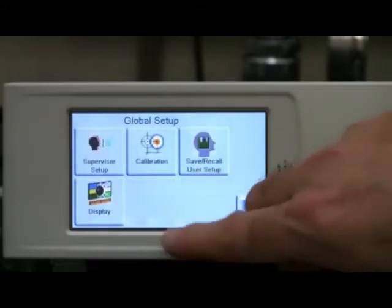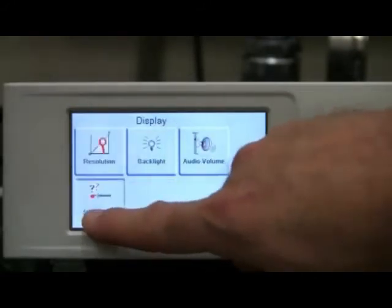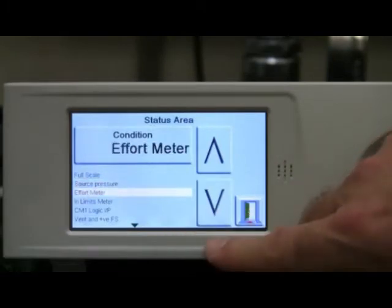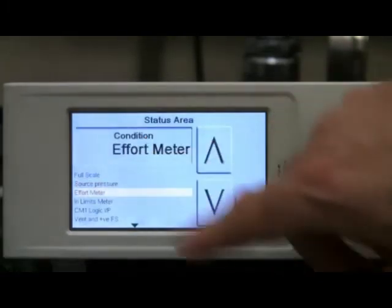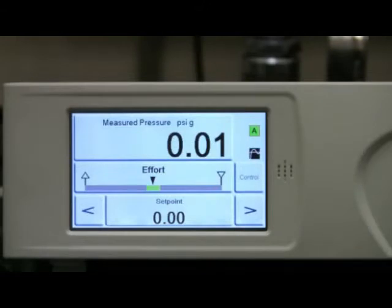Now that the source pressure is set, we will change the center section to display the effort meter, which continuously monitors the activity of the patented pulse width modulated control valves. This will allow us to quickly and easily determine if there is a large leak in our device center test connections. If the effort meter is in the center green section when the set point is reached, all is well. If the effort meter is outside the green area, this is an indication there may be a large leak, which would need to be addressed before proceeding with the calibration.